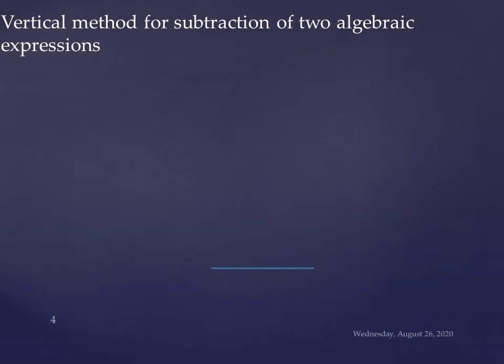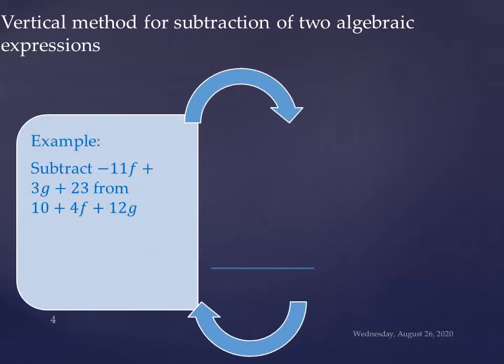Now the vertical method for the subtraction of two algebraic expressions. There is example subtract minus 11f plus 3g plus 23 from 10 plus 4f plus 12g. In the first expression there are three terms minus 11f plus 3g plus 23. In the second expression there are three terms.